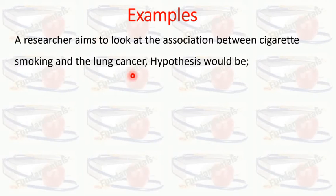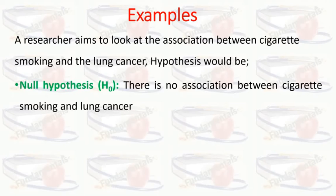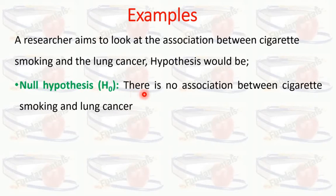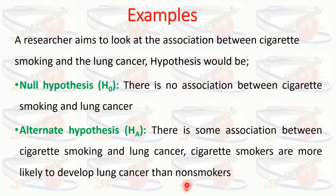Another example: a researcher aims to look at the association between cigarette smoking and lung cancer. The null hypothesis will be there is no association between cigarette smoking and lung cancer. Here we want to see the impact of one factor on another. The alternate hypothesis states there is some association between cigarette smoking and lung cancer, and cigarette smokers are more likely to develop lung cancer than non-smokers.